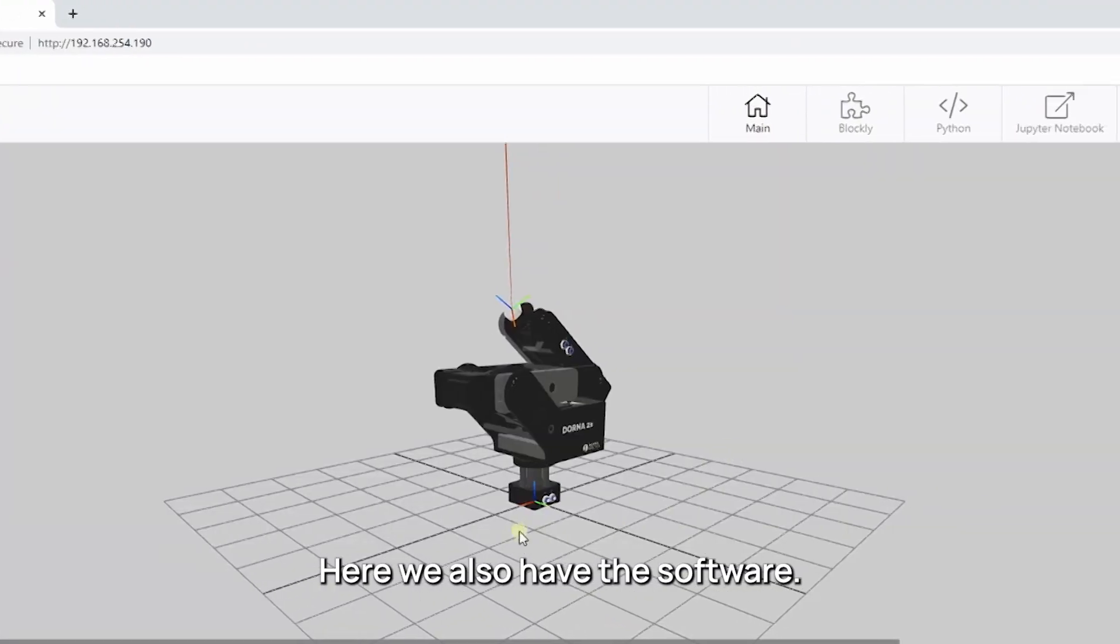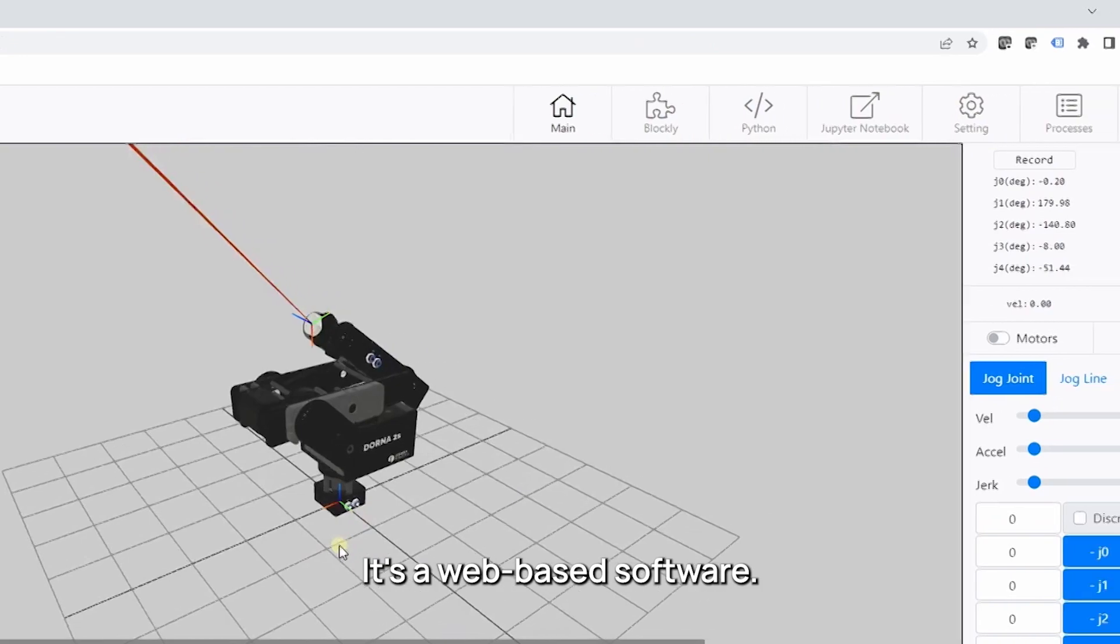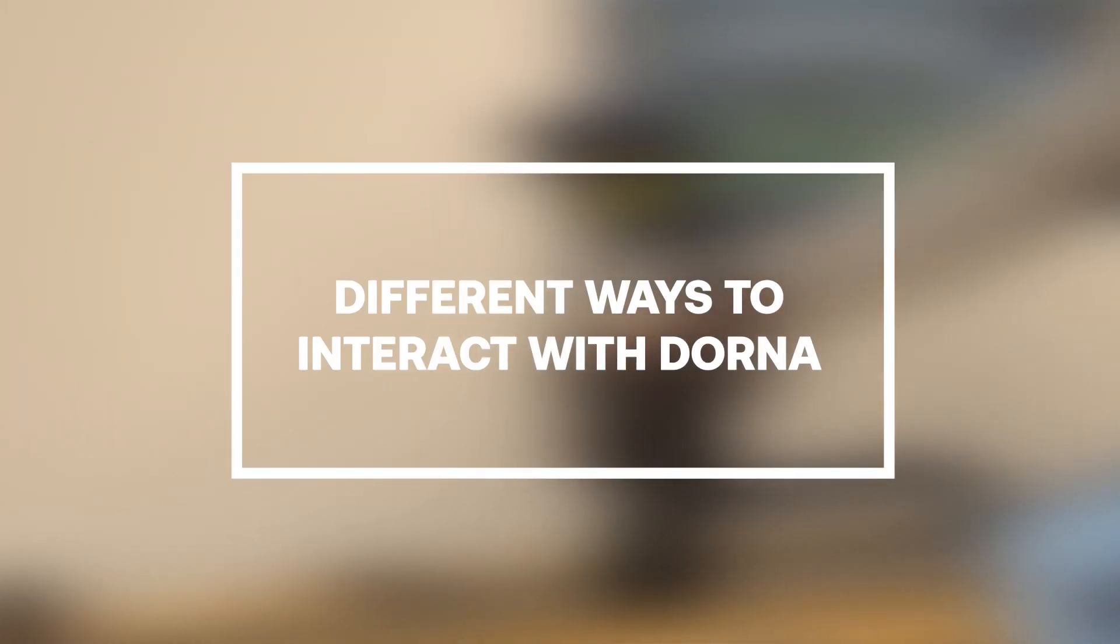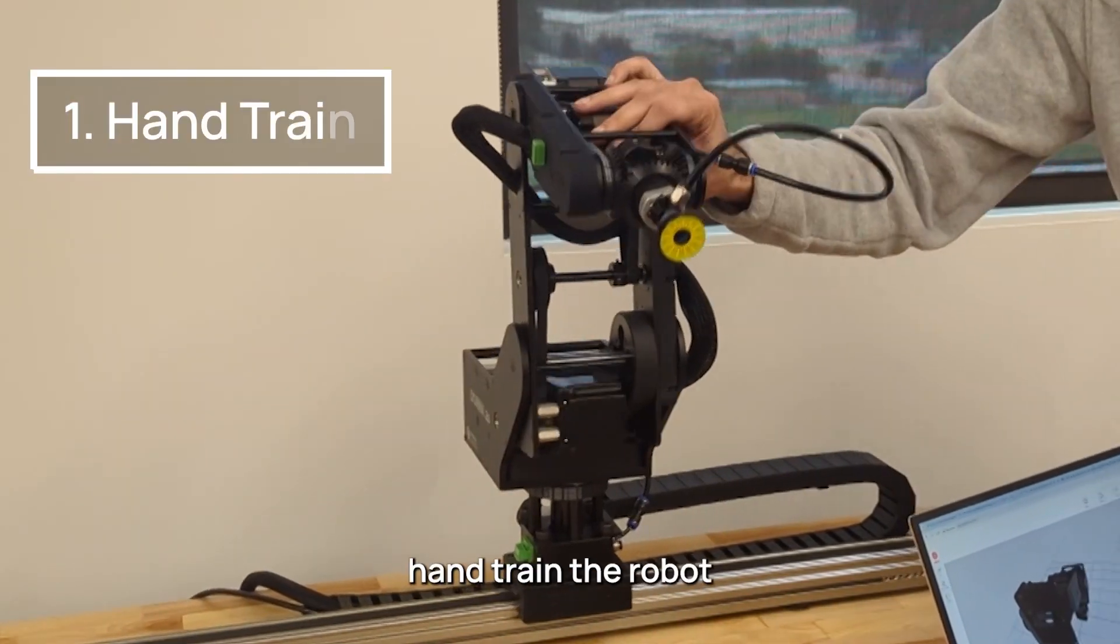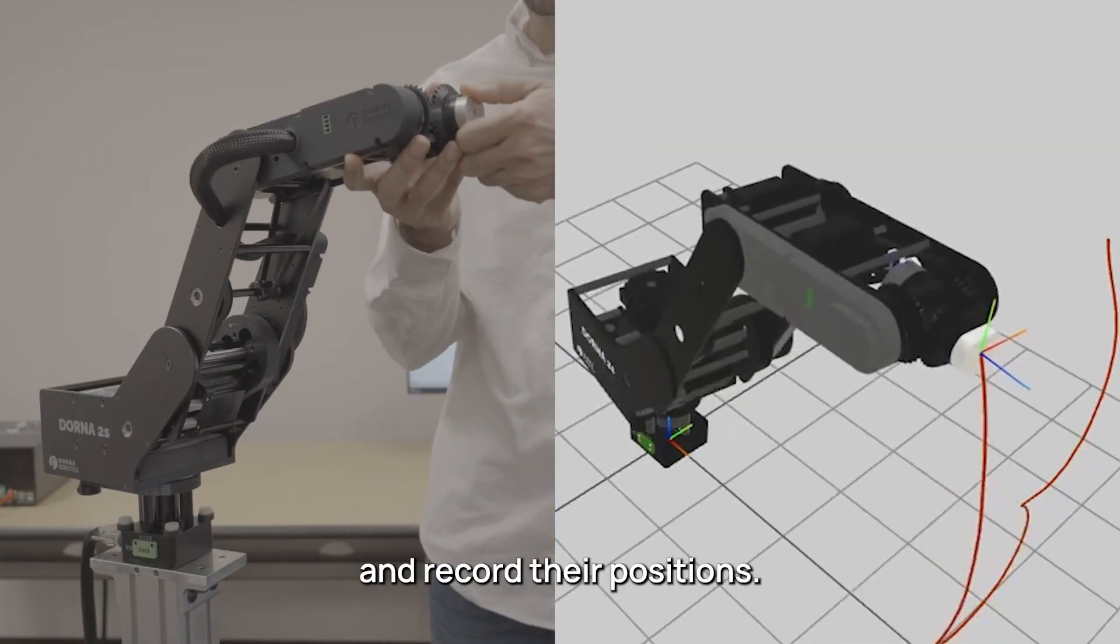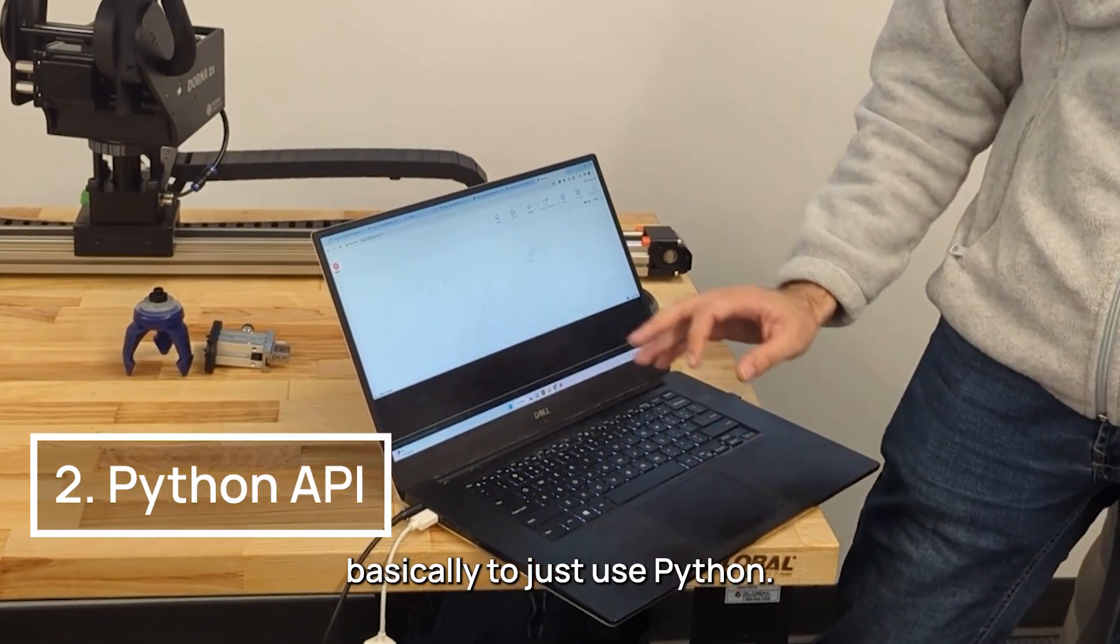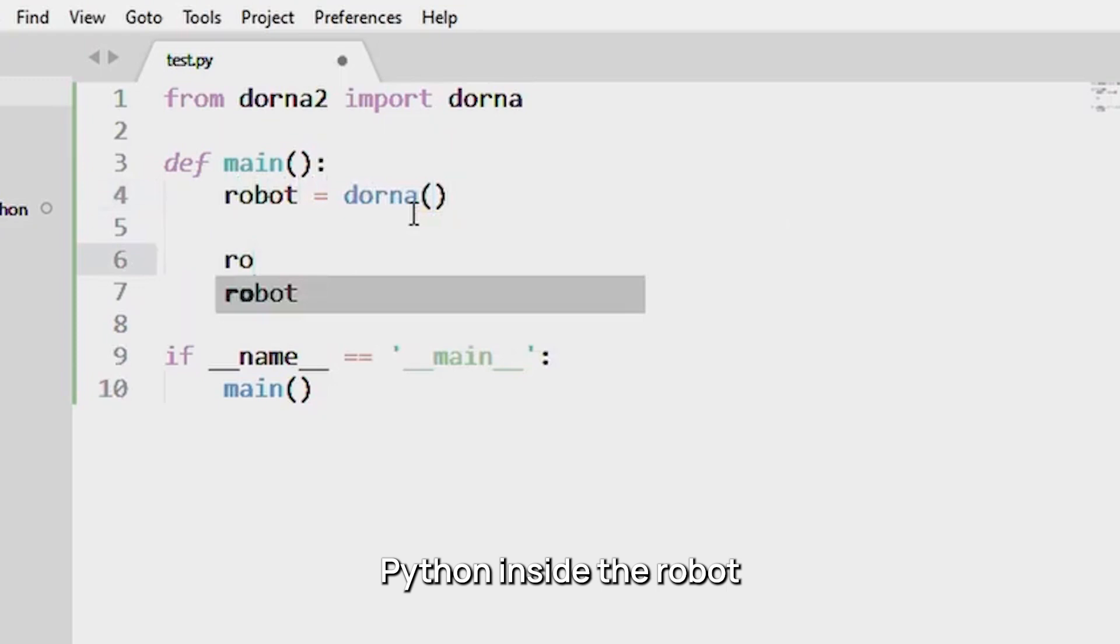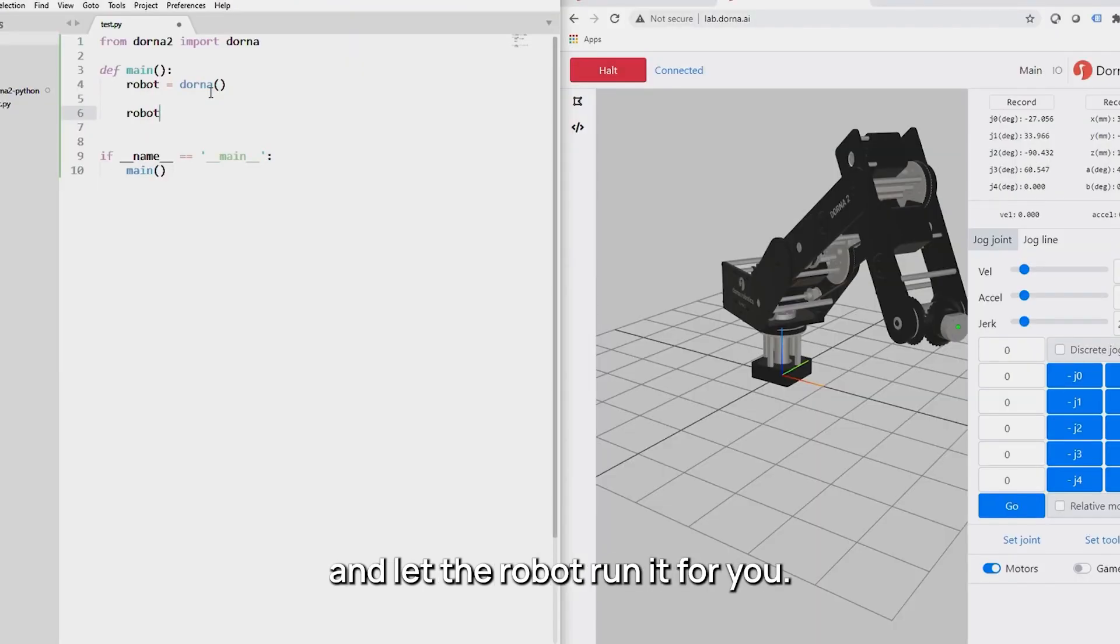Here we also have the software. It's a web-based software and there are many different ways to interact with the robot. One is to just move the arm around the space and record your position. Another way is you can use Python. You can basically write Python inside the robot and let the robot run it for you.